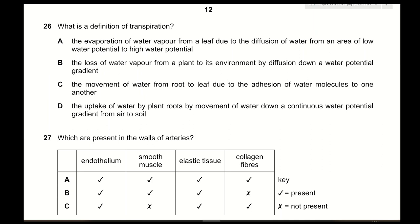Question 26: What is the definition of transpiration? Transpiration is the loss of water vapor through the stomata of the leaf. Option A — evaporation from low to high water potential — incorrect; it should be from high to low. Option B — loss of water vapor from a plant to its environment by diffusion down a water potential gradient — correct. The answer is B.